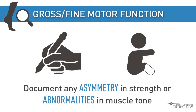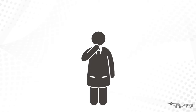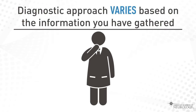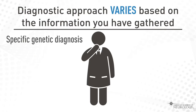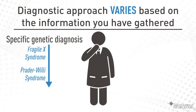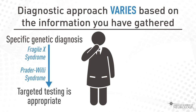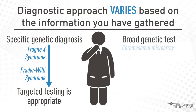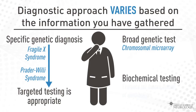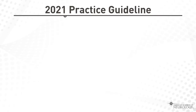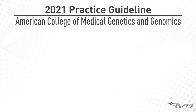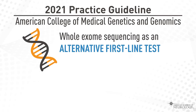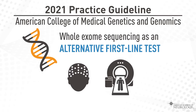After completion of the history and exam, the diagnostic approach to global developmental delay varies based on the information gathered. If a specific genetic diagnosis such as fragile X or Prader-Willi syndrome is suspected, targeted testing is appropriate. A broad genetic test known as a chromosomal microarray is typically considered early on, as is biochemical testing to evaluate for inborn errors of metabolism. A 2021 practice guideline from the American College of Medical Genetics and Genomics suggests whole exome sequencing as an alternative first-line test. Brain MRI or EEG may also be considered depending on your findings.